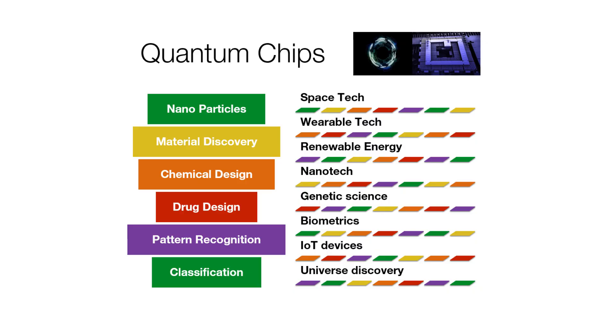On the hardware front, you have quantum chips. There's one school of thought saying quantum computing will have a quantum computer more powerful than a supercomputer. But there is another school of thought which thinks quantum chips will become really popular — like IoT sensors — with quantum chips embedded almost everywhere: nanoparticles, material discovery, chemical design, drug design, pattern recognition, space tech, genetic science, universe discovery, biometrics, and IoT devices. Who knows — this can catch up really fast compared to the classical versus quantum computing qubit analysis.